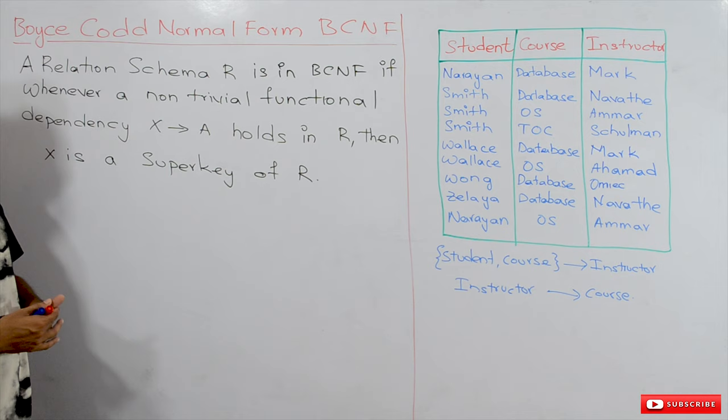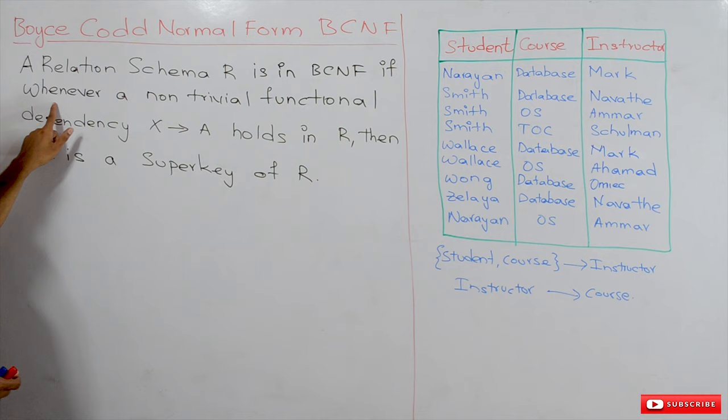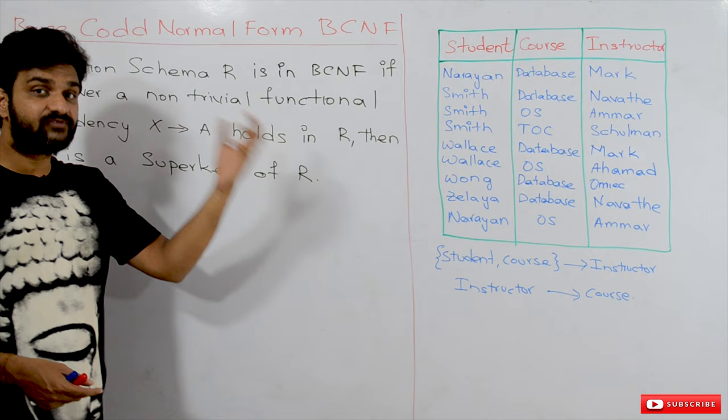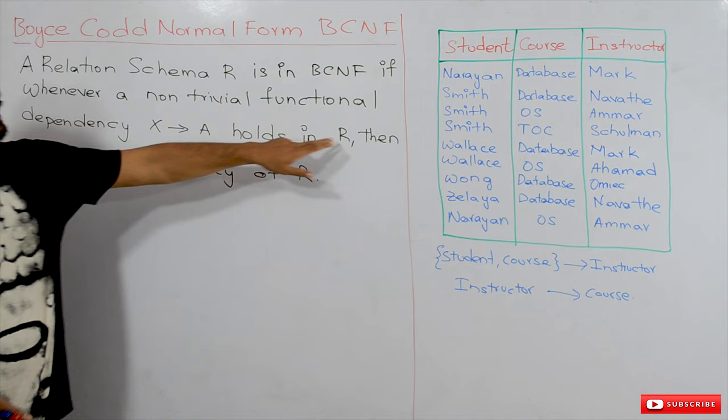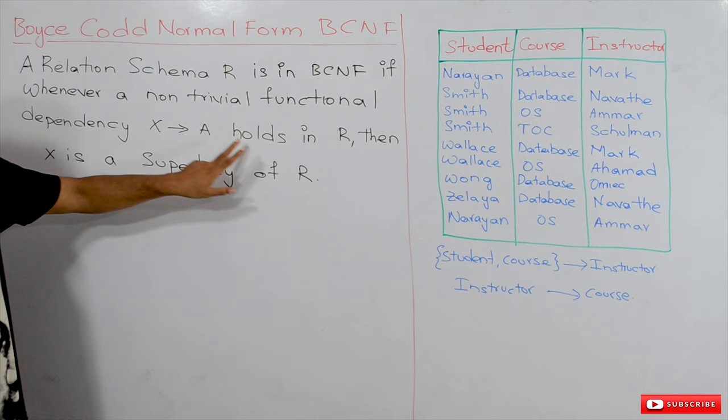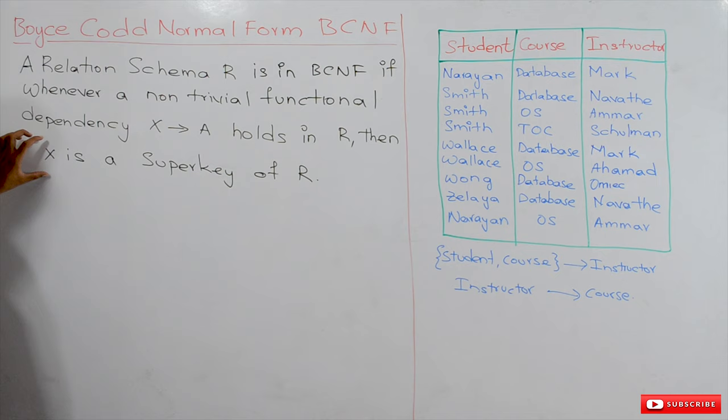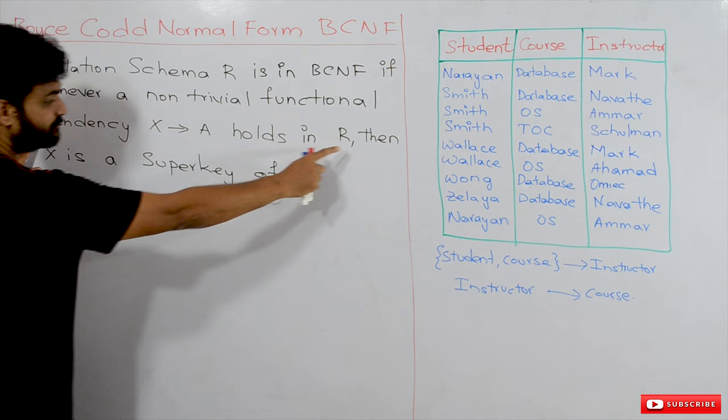A relation schema R is in Boyce-Codd Normal Form if, whenever a non-trivial functional dependency X determines A holds in R, then X is a super key of R. That is the definition — whenever any functional dependency X determines A holds in R, then X must be a super key of R.